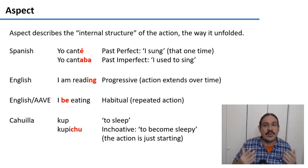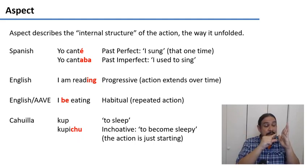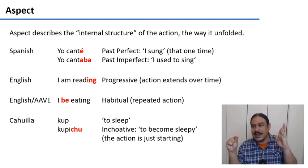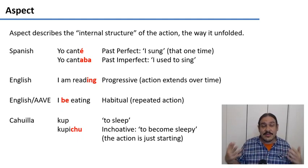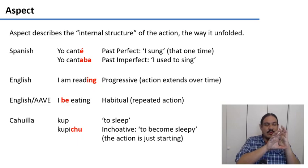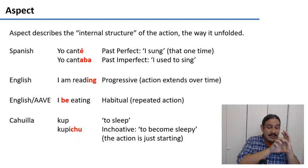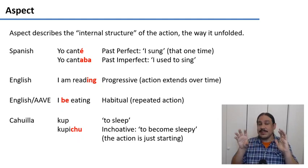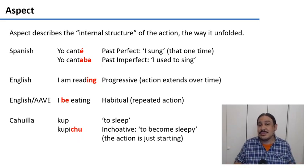English has the progressive aspect, which tells you that an action, similar to the imperfect, is extending over time. So 'I am reading' means that the action is still ongoing and shall continue into the future. African-American Vernacular English has an aspect called the habitual, which means that you perform the action again and again. 'I be eating,' for example, means that you eat today and tomorrow and the day after that, in a continued fashion. Many languages have habituals — Turkish has habitual aspects, for example.